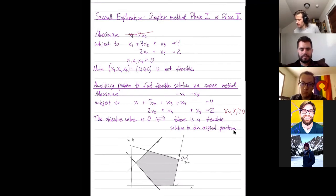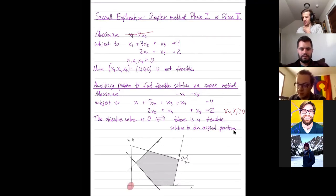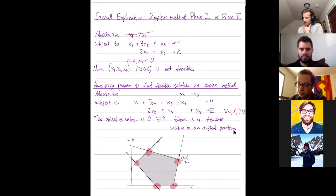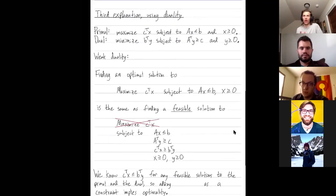Here's a picture of a random polytope where it's not easy to find a feasible solution — 0, 0, 0 is not feasible. But you use the simplex method to find your starting basic feasible solution, and then you use the same simplex method to optimize it. Neither phase one nor phase two is any harder than the other. So here's our third new explanation for why optimizing a linear program is really no harder than finding any feasible solution, and it relies on duality.